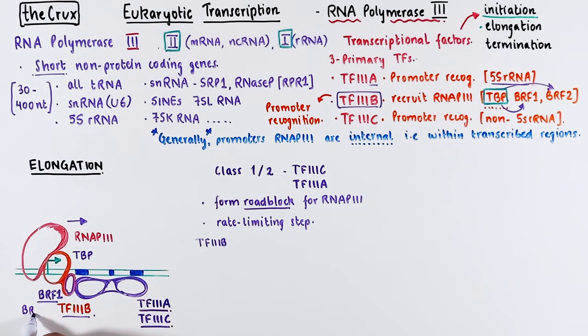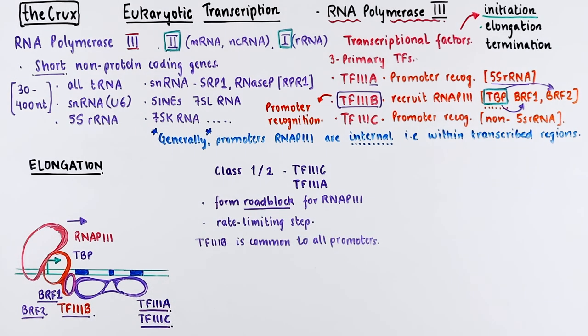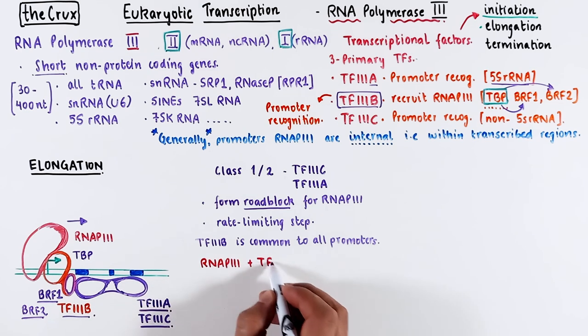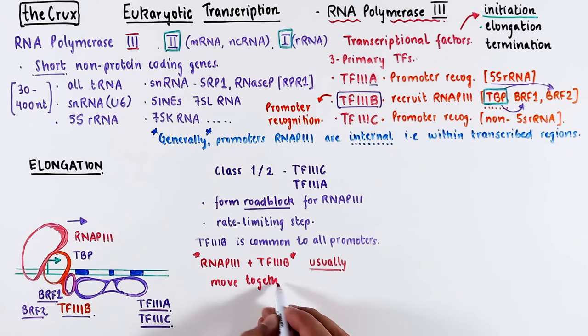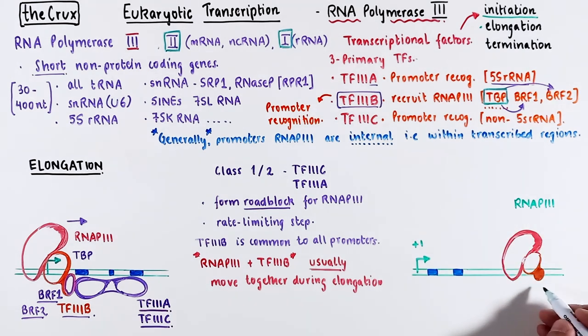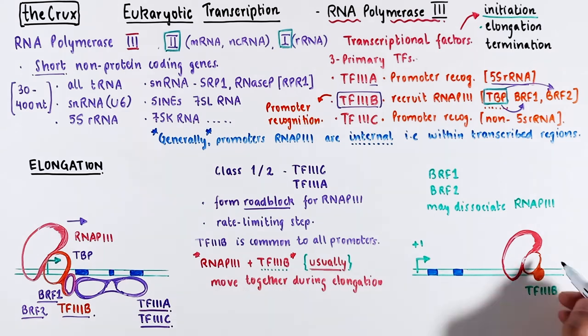Factor 3B is common to all promoters, and it can be either with BRF1 or BRF2 version. Therefore, factor B doesn't seem to be a major hindrance, also because the elongation complex consists of both TF3B and RNA polymerase 3. Once the roadblock is cleared, the polymerase and TF3B can translocate and initiate RNA synthesis. Sometimes BRF1 and BRF2 may dissociate after a while, suggesting that a complete factor B might not play a significant role in elongation.